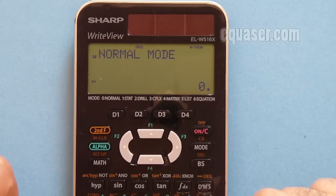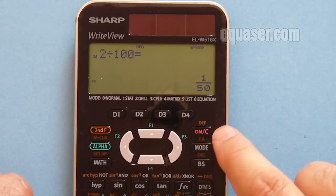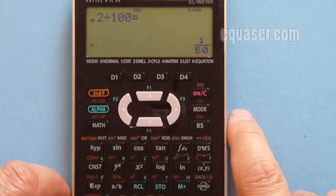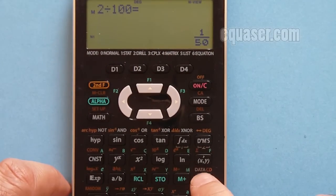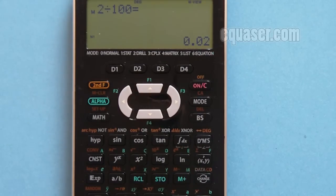For example, 2 divided by 100. As you can see on the screen, it shows 1 over 50. Now if I want to get the value, I have to press the change button here until I get it. We want to see it with one shot on the screen, so here is how we do it.